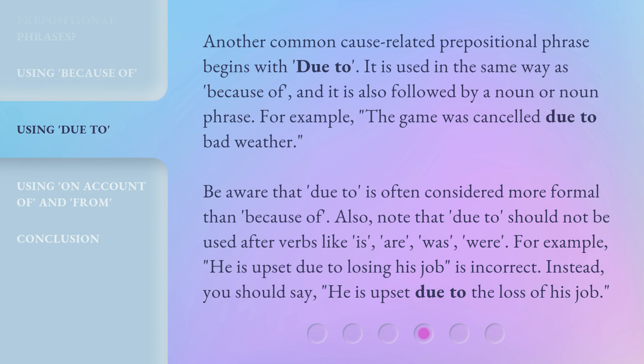Another common cause-related prepositional phrase begins with 'due to.' It is used in the same way as 'because of,' and it is also followed by a noun or noun phrase. For example: 'The game was canceled due to bad weather.' Be aware that 'due to' is often considered more formal than 'because of.' Also note that 'due to' should not be used after verbs like 'is,' 'are,' 'was,' or 'were.' For example, 'He is upset due to losing his job' is incorrect. Instead, you should say, 'He is upset due to the loss of his job.'